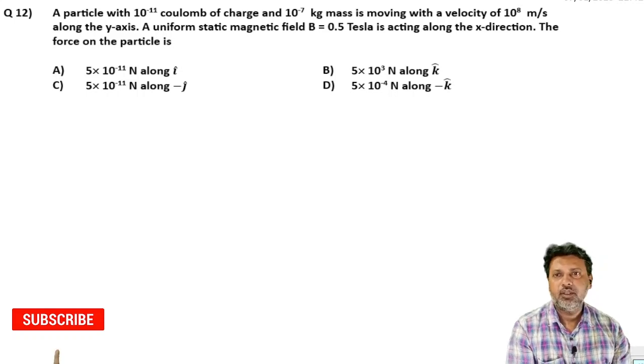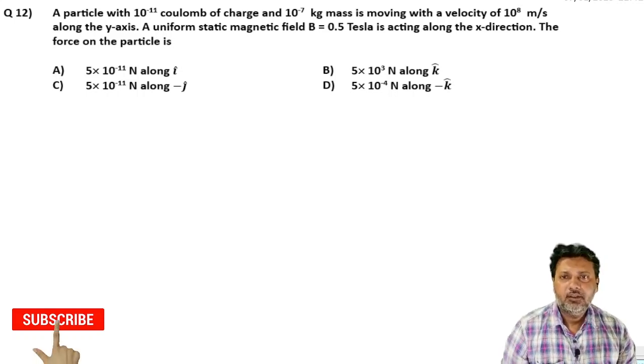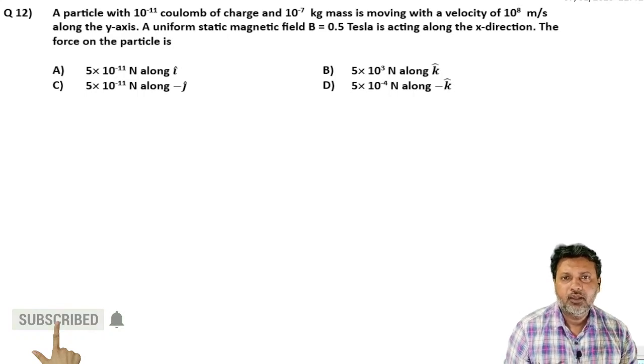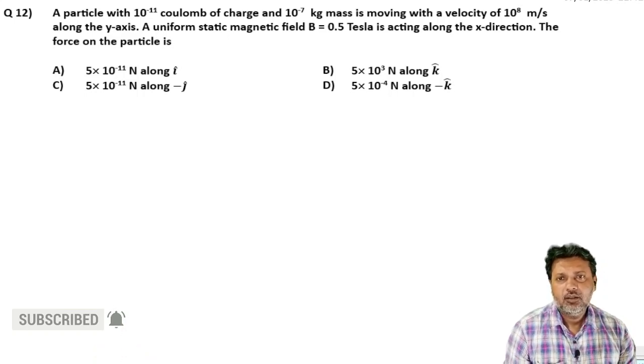So next question. A particle with 10 to the power minus 11 coulomb of charge and 10 to the power minus 7 kilogram mass is moving with a velocity of 10 to the power 8 meter per second along the y-axis. A uniform static magnetic field B equal to 0.5 Tesla is acting along the x-direction.